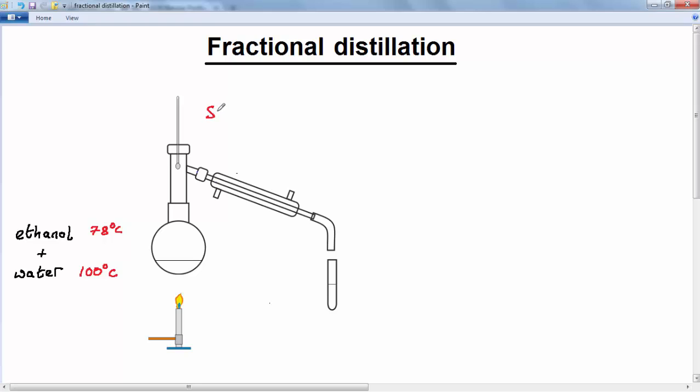Using this simple distillation setup that we have here, we would not be able to obtain a pure sample of ethanol in our collection test tube. The reason for that is because some of the water will also evaporate when the mixture is heated, and it will also pass down the condensing tube and will be collected in the test tube. So what you'll get here is still a mixture of ethanol and water, but there will be a greater concentration of ethanol.